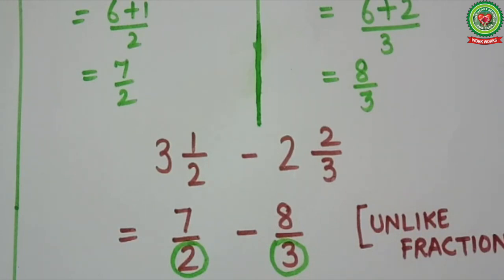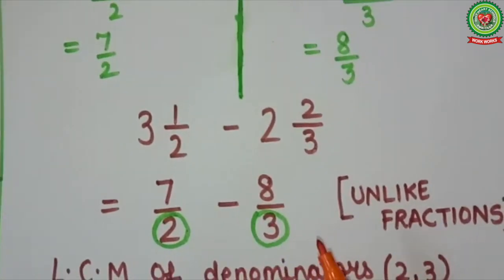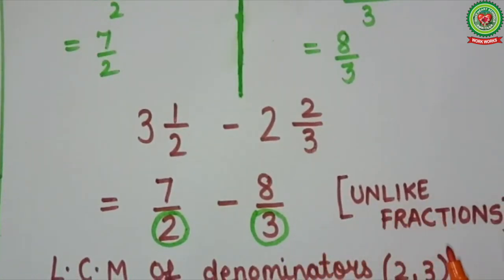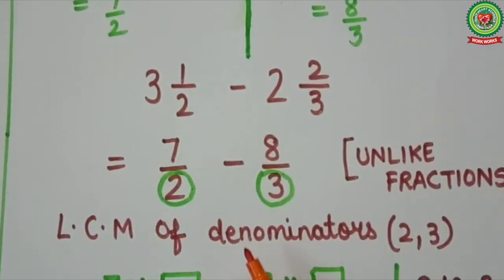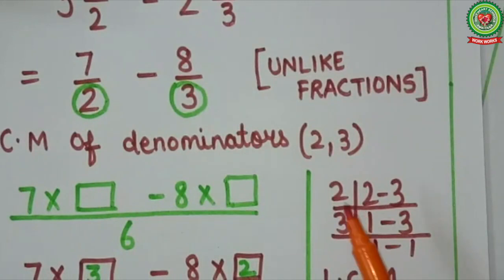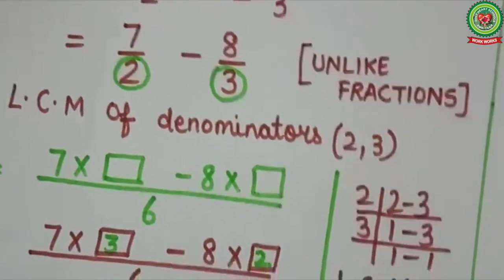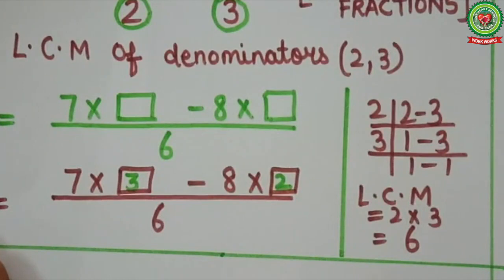Step 1: denominators are different, therefore these are unlike fractions. Step 2: LCM of denominators using the antenna method. Here LCM will come — first it will go on table of 2, then on table of 3. LCM is 2 into 3, that is 6.